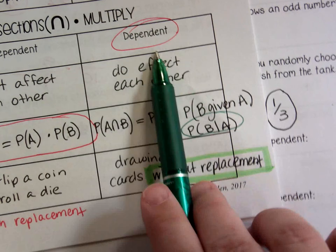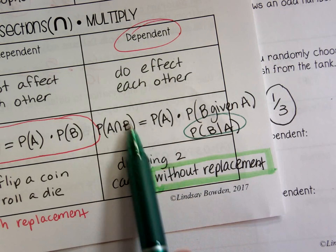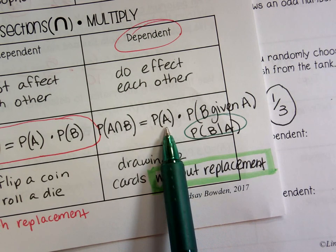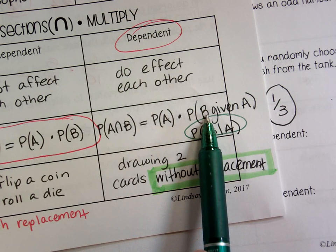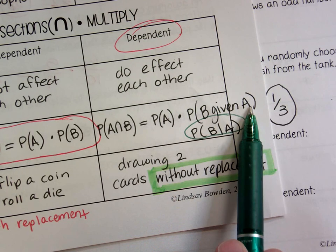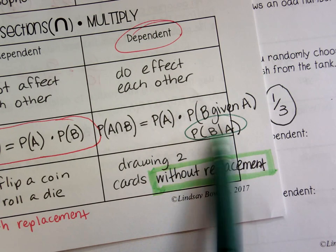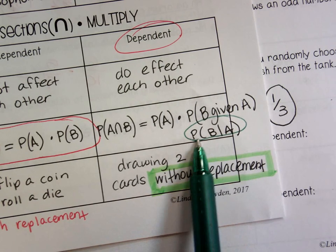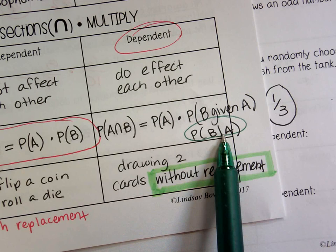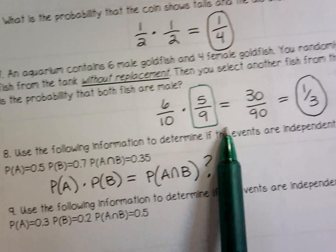In this dependent situation, the probability of getting two males is the probability of getting a male — just the plain probability — times the probability of getting a male given that we already got a male. We already took one out of the sample space. This is just another way of writing probability of B given A, or probability of drawing a male given that I already took one out.